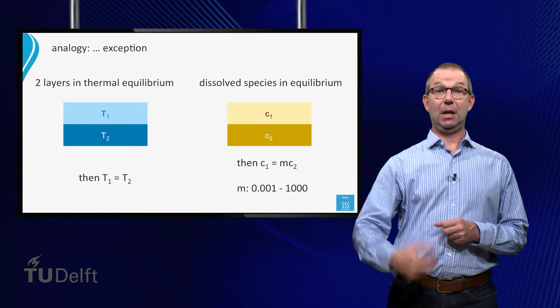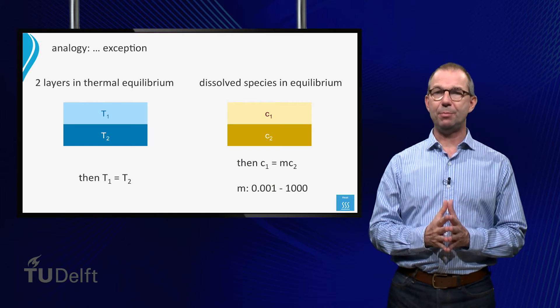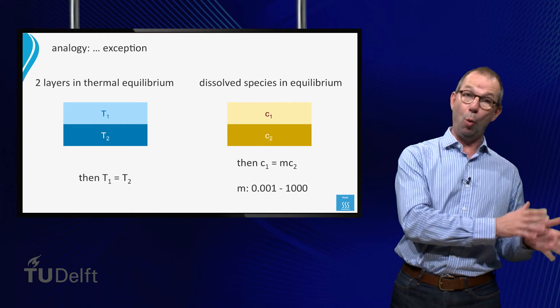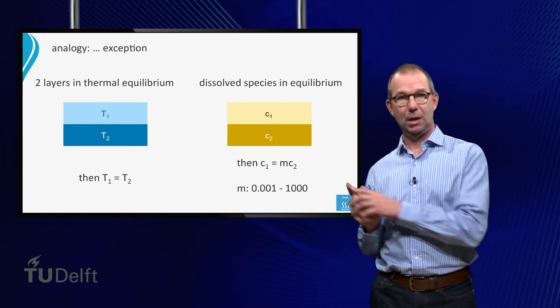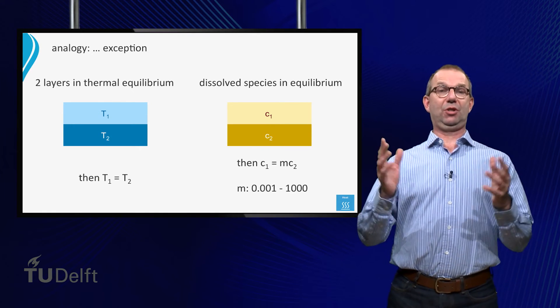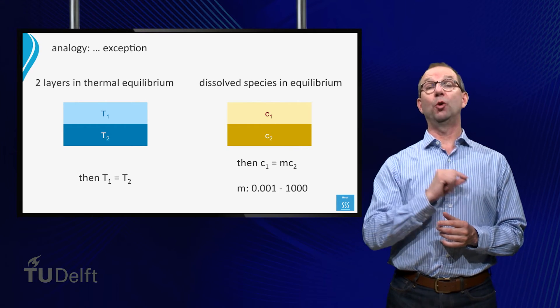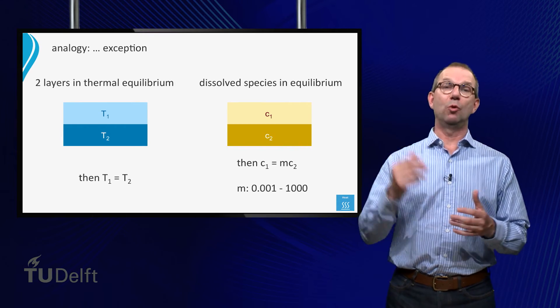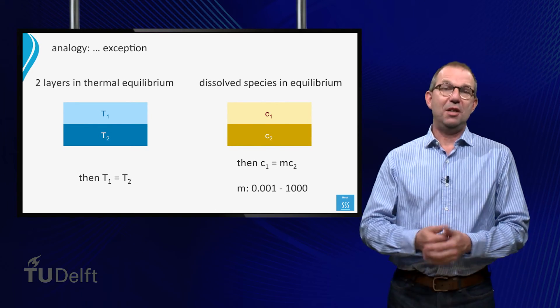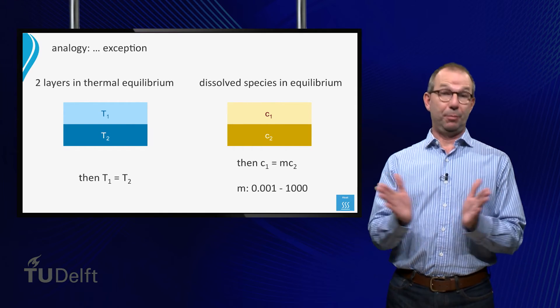That is the two layers and component X. M can for varying substances take on very different values, easily ranging from 0.001 to 1000. Actually now we know this, we could say that temperature is the strange guy. It knows only one value for its M, namely M equals 1. Of course we don't use the M concept for temperature. It is much easier to say that in thermal equilibrium the temperatures are the same.